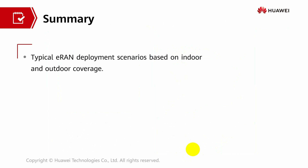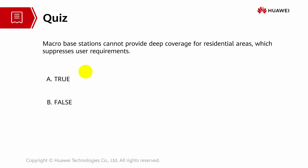That's all for this part. We have discussed the typical ERAN deployment scenarios based on indoor and outdoor coverage. For the quiz: macro base stations cannot provide deep coverage for residential areas, which suppresses user requirements — is this true or false? The answer is true. Thank you and have a nice day.